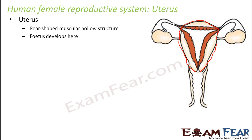The egg released from the ovary gets fertilized, passes through the fallopian tube, and finally reaches the uterus where the fertilized egg develops into a baby. The uterus holds the baby for nine months. It is supported by ligaments attached to the pelvic wall.